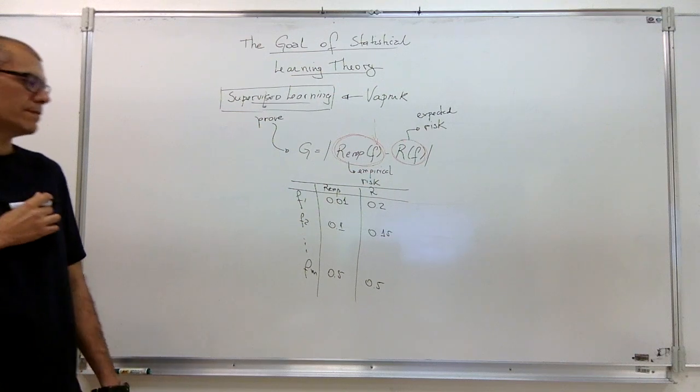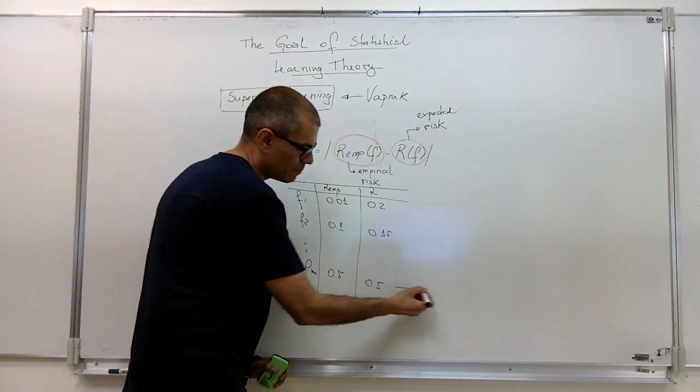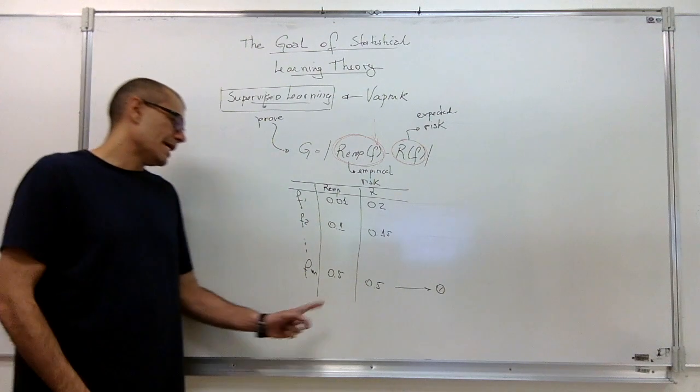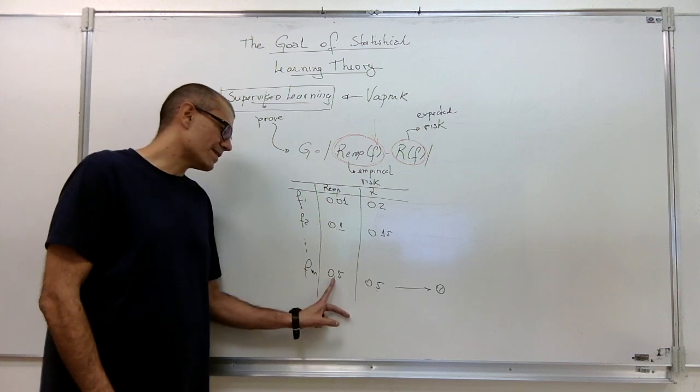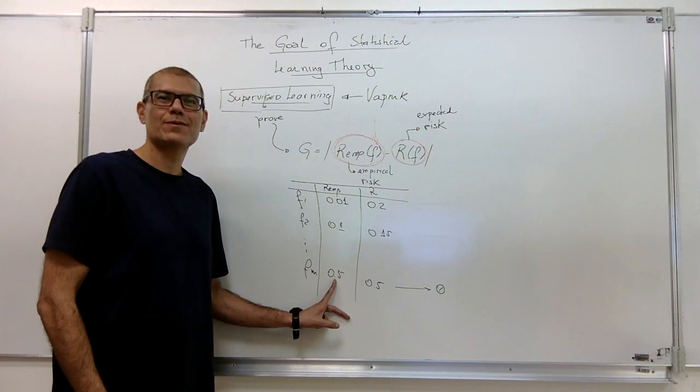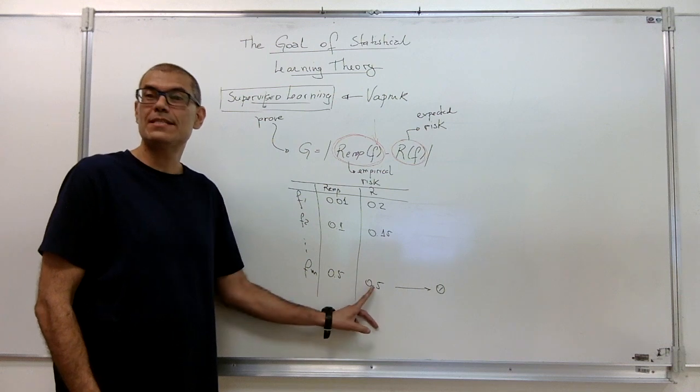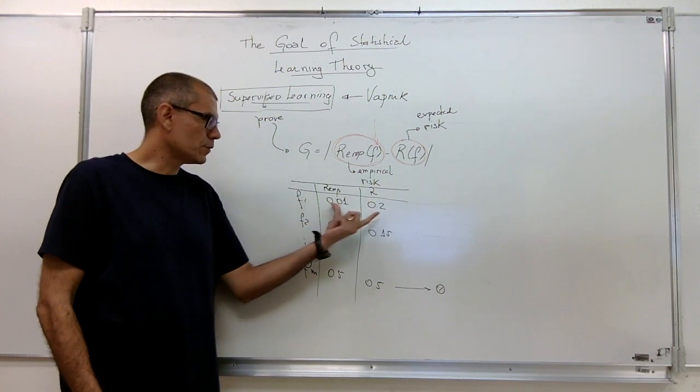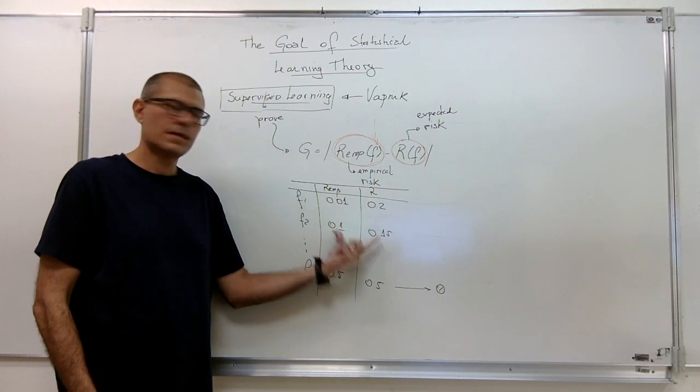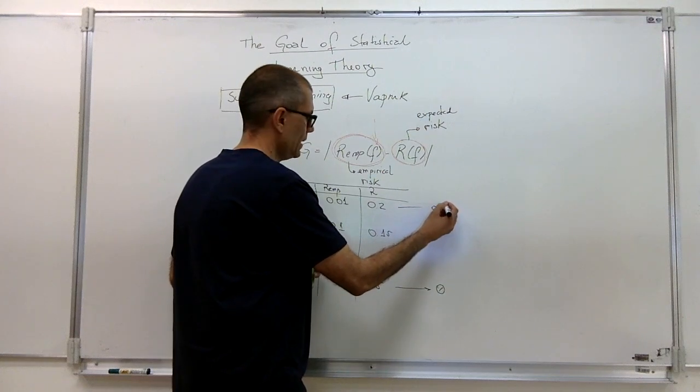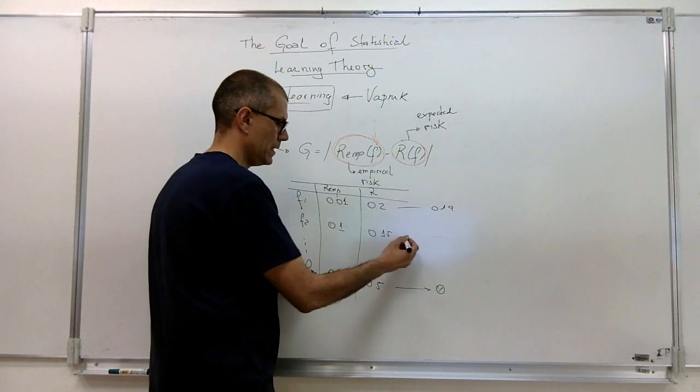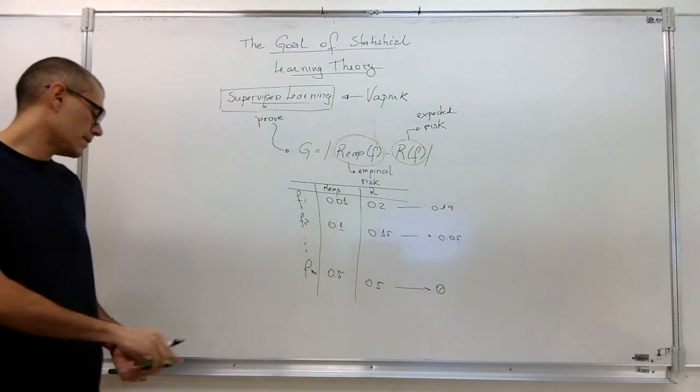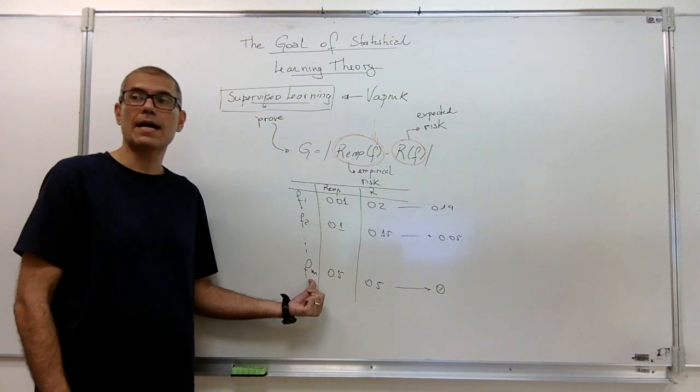If we measure generalization, this guy is the one that best generalizes, because generalization means zero in this case. So I mean, it doesn't matter if we have the smallest risk as possible. Generalization is not about that. It's about the distance we have in between the empirical and the expected risk. So apart from the good results we've got here, and this would be 0.19, right? And here would be 0.05. Apart from that, the best generalization happens with this guy.